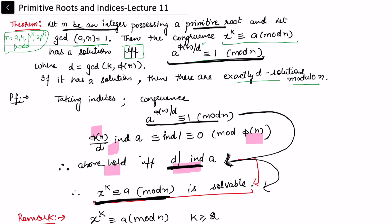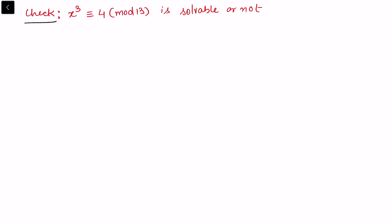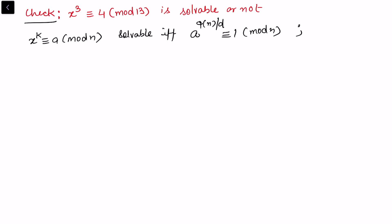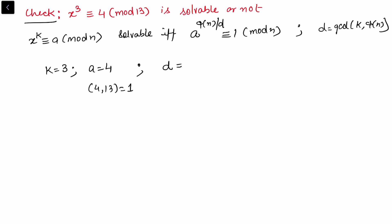Let's look at an example. We want to check whether x³ ≡ 4 (mod 13) is solvable or not. The condition is that x^k ≡ a (mod n) is solvable if and only if a^(φ(n)/d) ≡ 1 (mod n), where d = gcd(k, φ(n)). Comparing: k = 3, a = 4, and gcd(4, 13) = 1 as required. We calculate d = gcd(3, φ(13)) = gcd(3, 12) = 3.